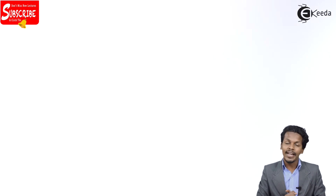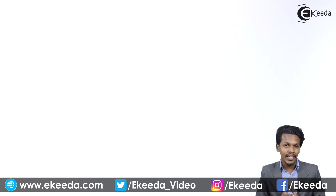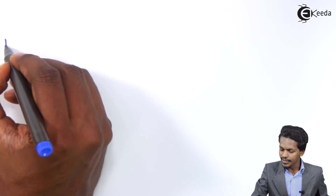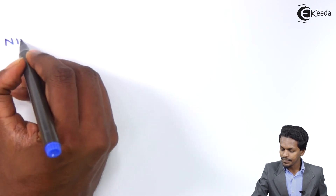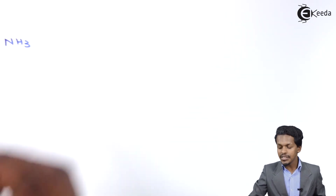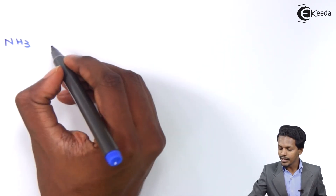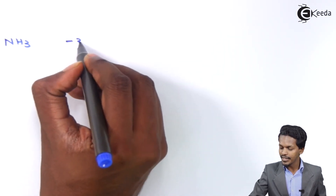Nitrogen has a variety of oxidation states ranging from minus 3 to plus 5. For example, in ammonia (NH₃), the oxidation state of nitrogen is minus 3. In hydrazine (N₂H₄), the oxidation state of nitrogen is minus 2.